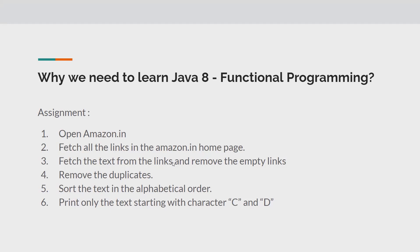Suppose you see 'Laptops' appearing twice — I don't want to see it a second time, so remove all duplicates. Once we have the list of text, arrange them in alphabetical order. At the end, I only want the links starting with characters C and D. If you're watching this on your laptop, please do try out this assignment.